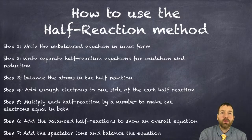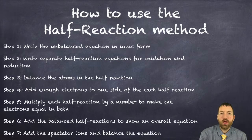Here are the steps on how to use the half reaction method. Step one: write the unbalanced equation in ionic form. Step two: write separate half reaction equations for the oxidation and reduction. Step three: balance the atoms in the half reaction. Step four: add enough electrons to one side of each half reaction.